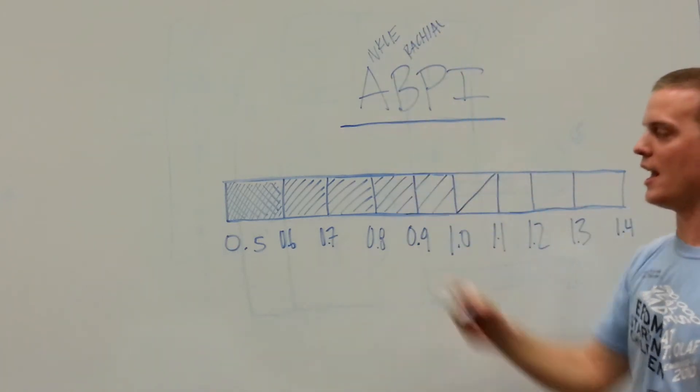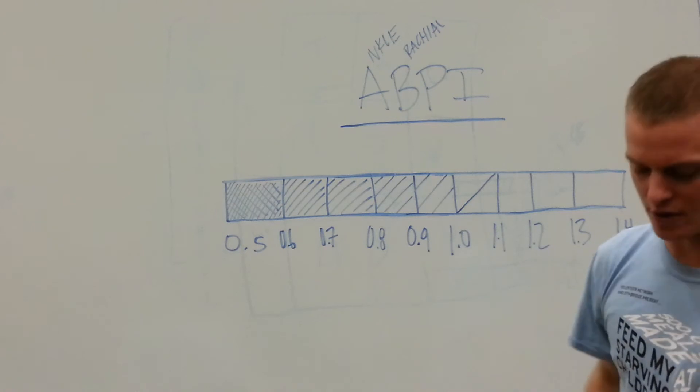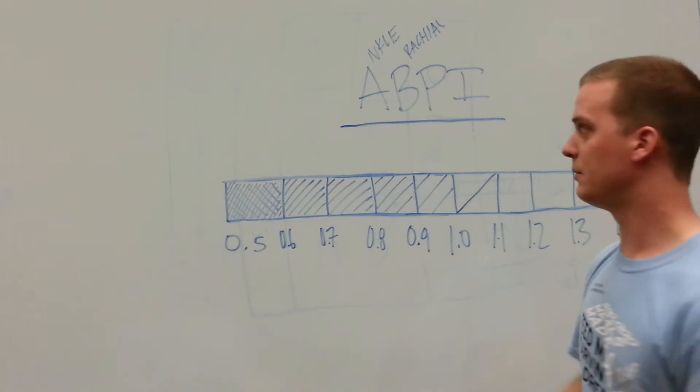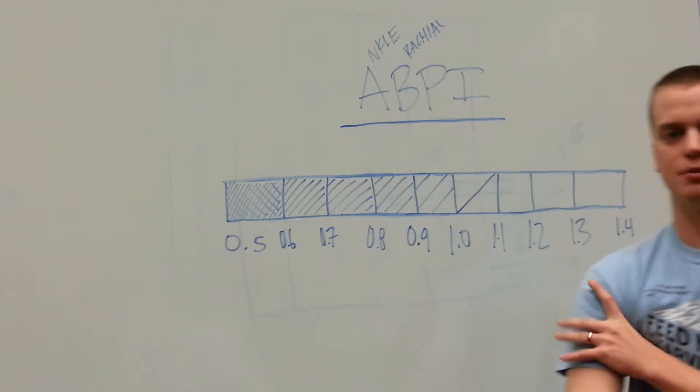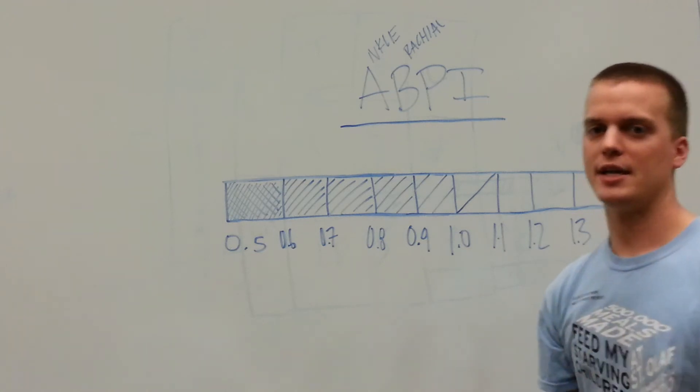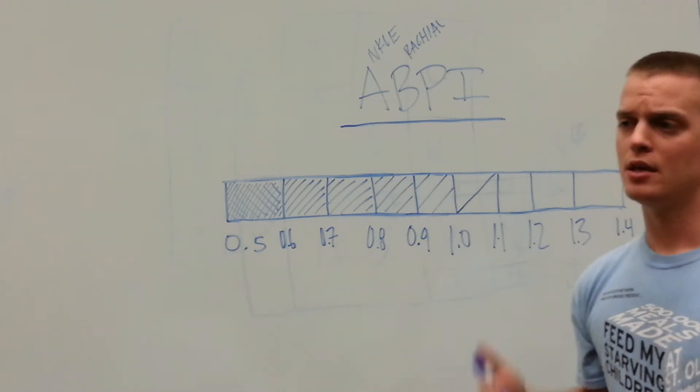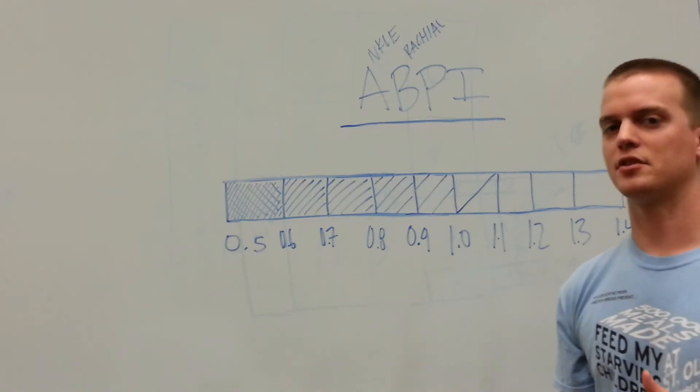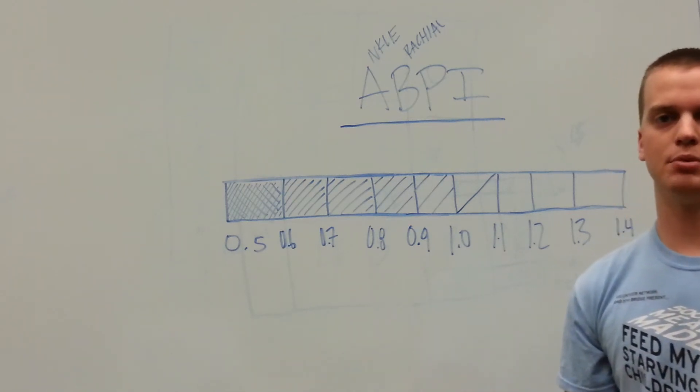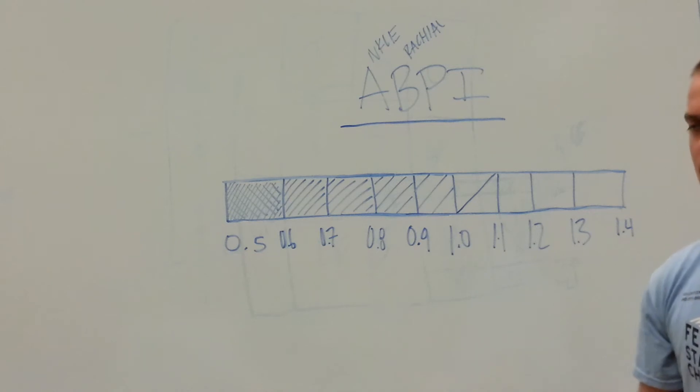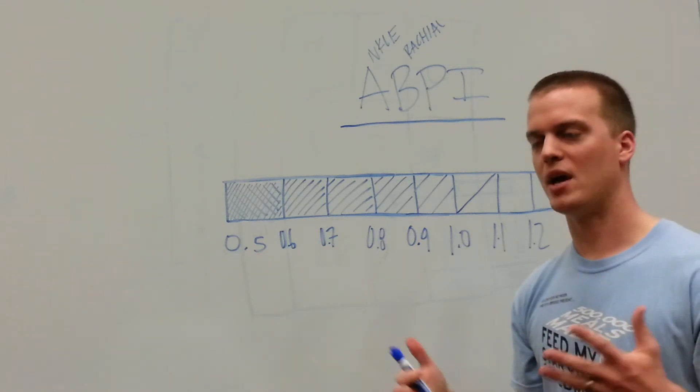An ankle blood pressure is taken from your distal lower limb and your brachial is the one you're used to, your arm blood pressure. You can take both blood pressures either at rest, which is typically how it's done. Some people ask you to do some exercise, such as walking on a treadmill or in place for about five minutes. Either way is an accepted method in the United States.